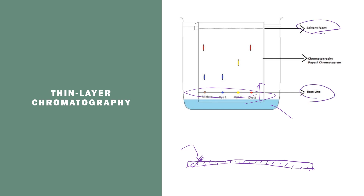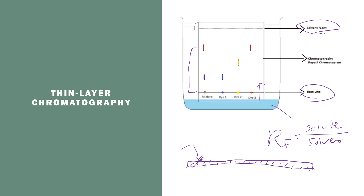The distance that the solvent travels is called the solvent front, and we also have a starting point. From here we can calculate what's called the RF value, or retention factor. The retention factor is the distance the solute traveled over the distance the solvent traveled. You can calculate an RF value for the red spot by dividing the distance it traveled by the distance the solvent traveled, and similarly for the blue spot.